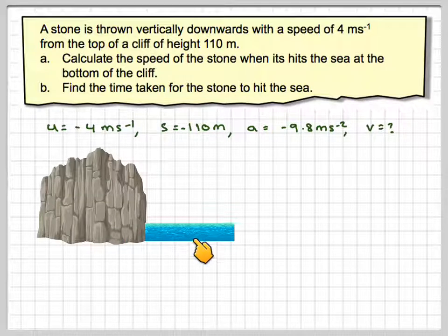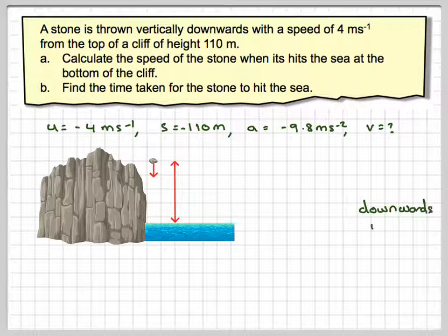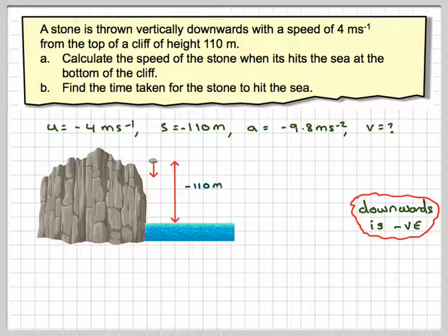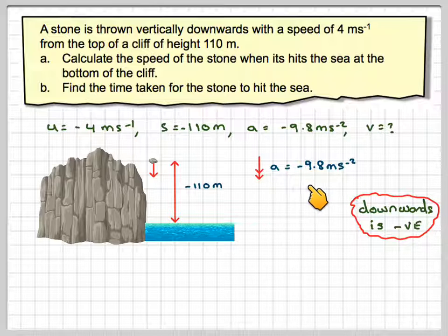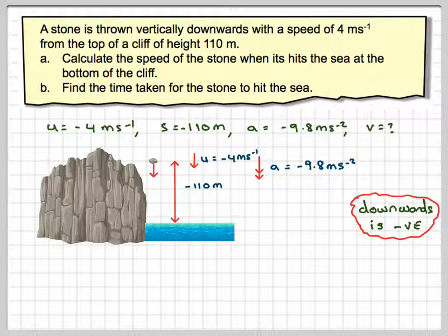So there's my cliff, my sea, there's my stone going downwards. Downwards is negative, therefore minus 110 metres. Acceleration, minus 9.8 metres per second squared. And the initial velocity is minus 4 metres per second.